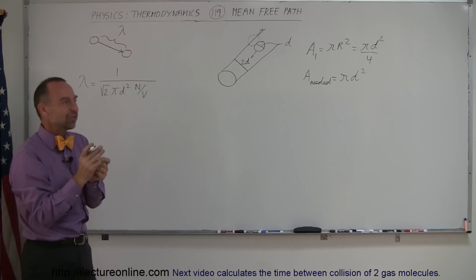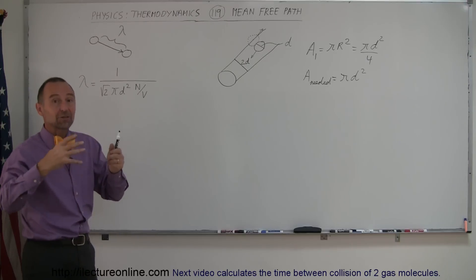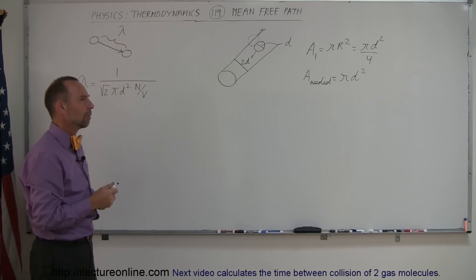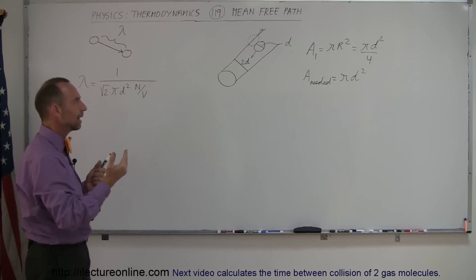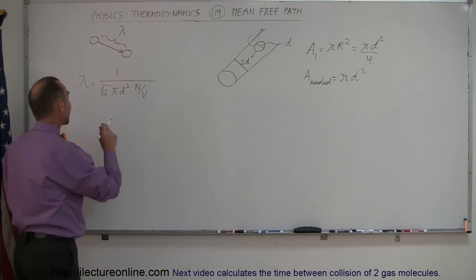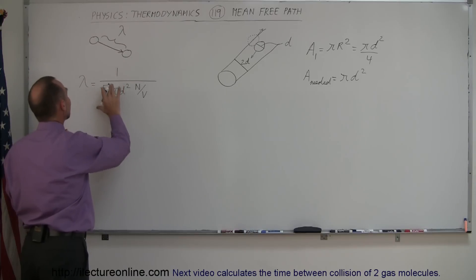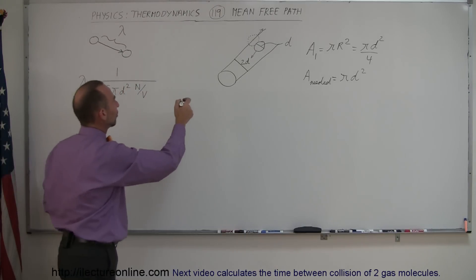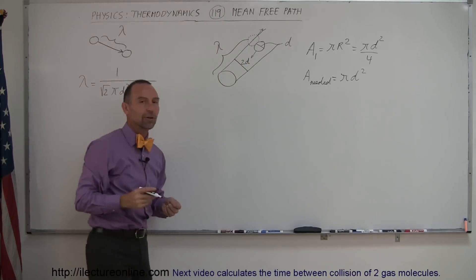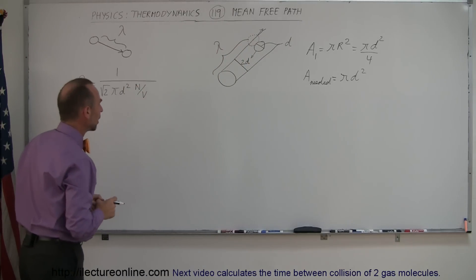And if the molecules were stationary, then that would be the space molecules have available to them in the box or in a particular container that has gas. But the molecules aren't stationary, they're actually moving. So it turns out that it actually reduces their available space before they collide by a factor of one over the square root of two. And that then gives us, if you take the inverse of that, that then gives us the length that they can travel before they collide with another molecule.